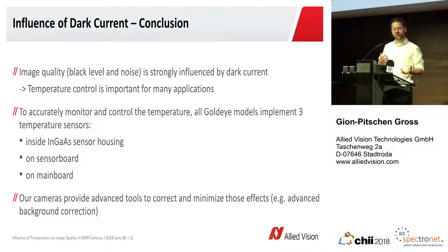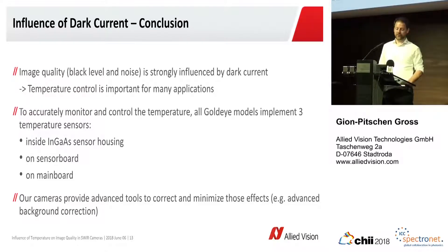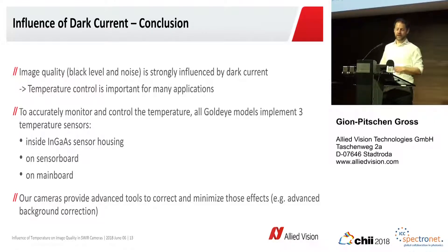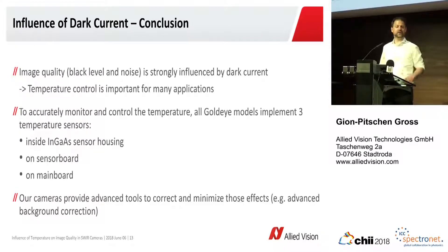The image quality, black level, and noise are strongly influenced by dark current, so temperature control is very important in many applications. It always depends on the application, but in hyperspectral applications it's usually very important to control the temperature accurately. In all of our InGaAs cameras, we have three temperature sensors integrated: one inside the sensor itself, one on the sensor board, and one on the main board, and all this information can be read out at all times. We take measures to control this temperature in most cameras, and the cameras also provide advanced tools to correct and minimize those unwanted effects.